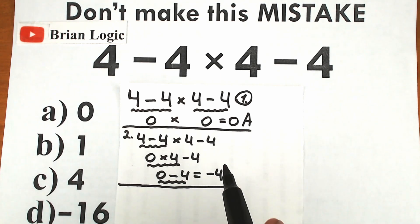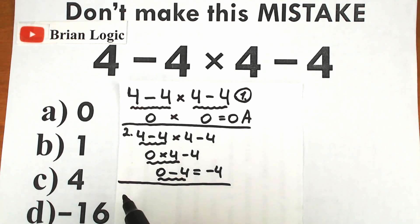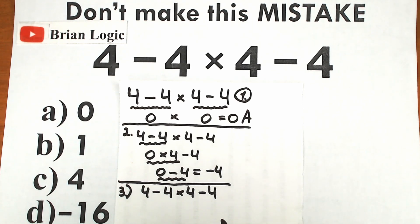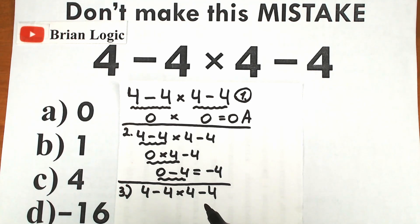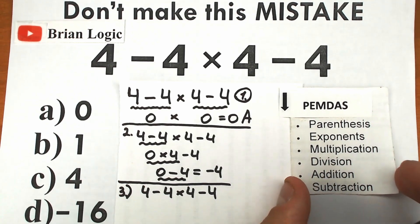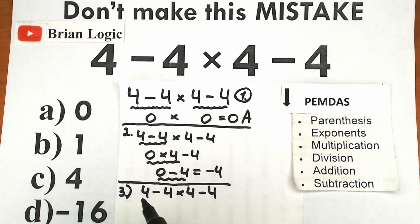Now let's look at the third interpretation. In math, it's important to know the order of operations to solve this correctly, step by step. Just like in biology you need to know the correct definition or rule, in math we need to know the correct order of operations — because whatever order we select is going to create a different answer.